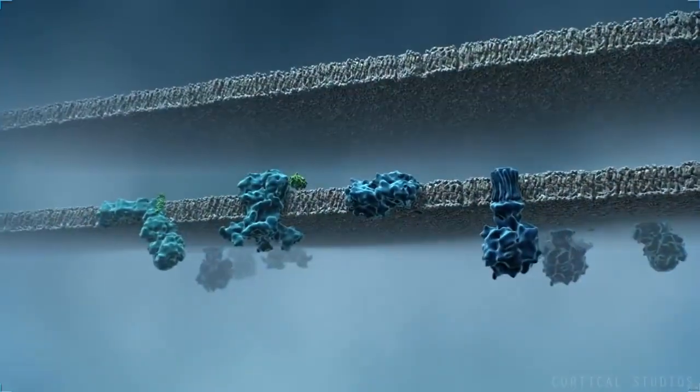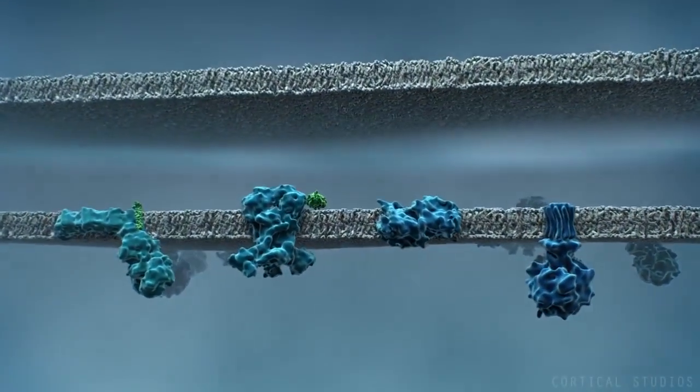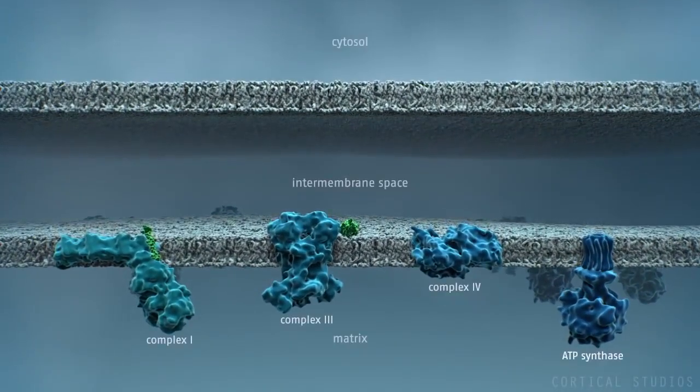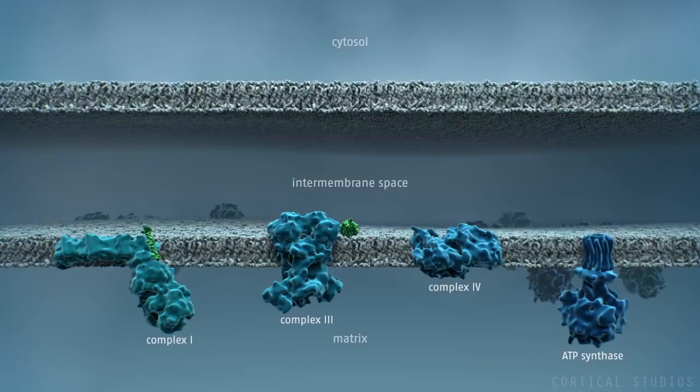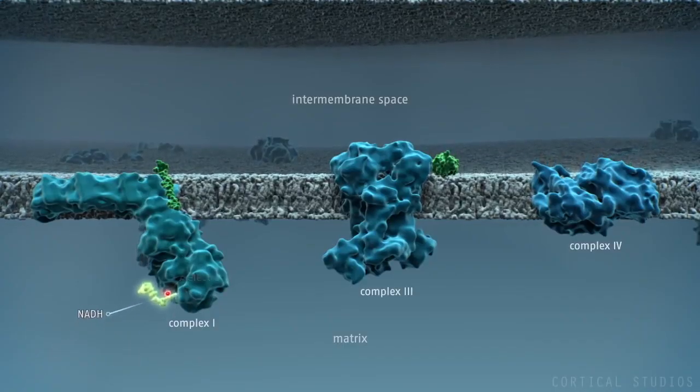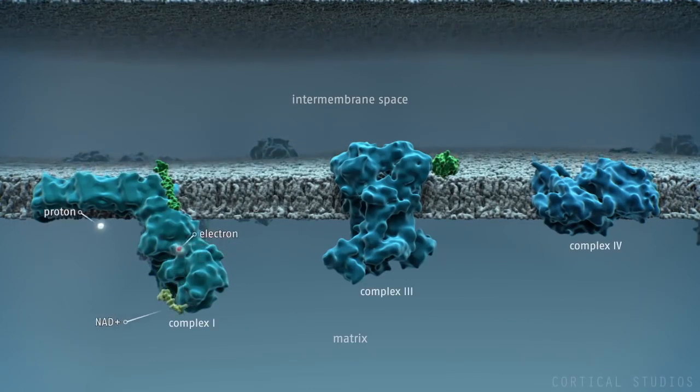Oxidative phosphorylation involves several membrane protein complexes. Nutrients provide high-energy electrons in the form of NADH, which are used by the protein complexes to pump protons from the matrix to the intermembrane space.